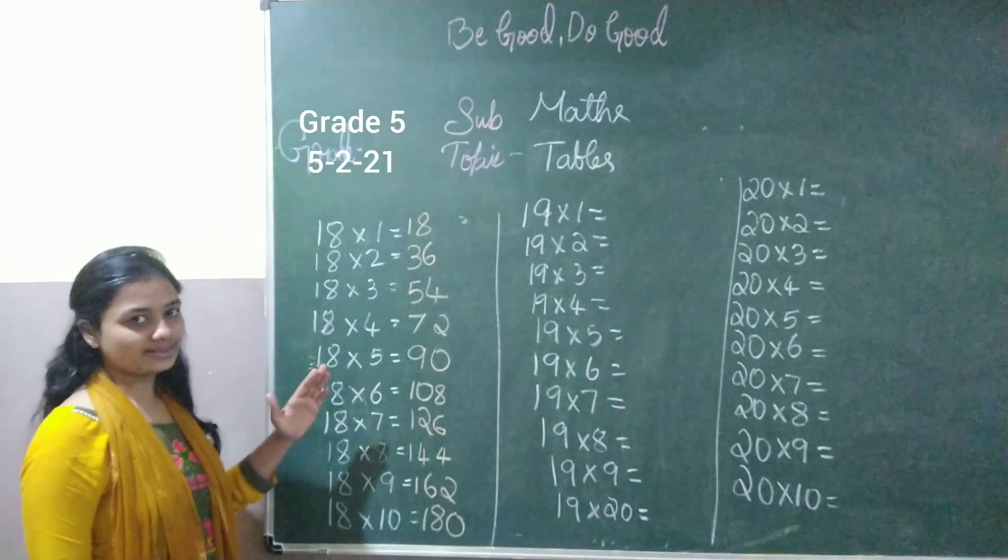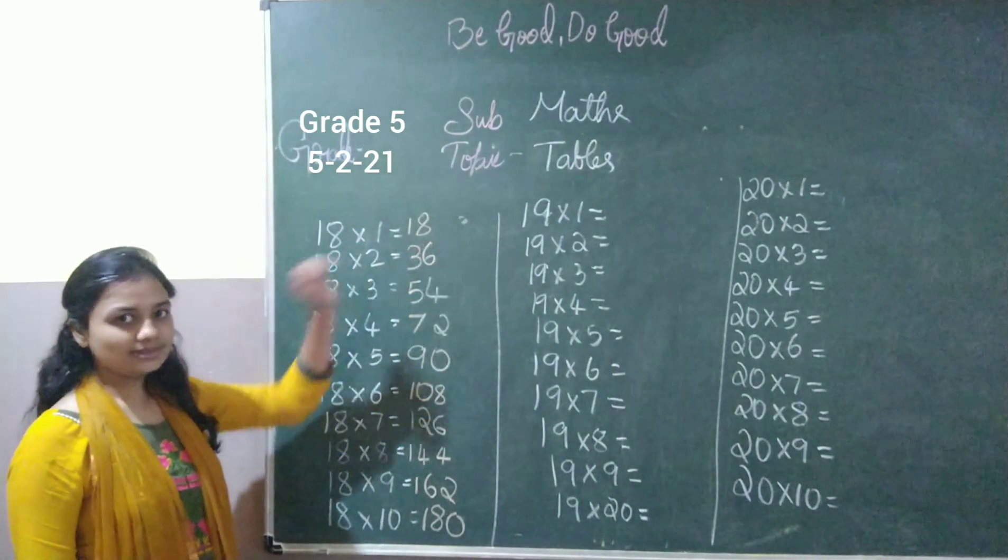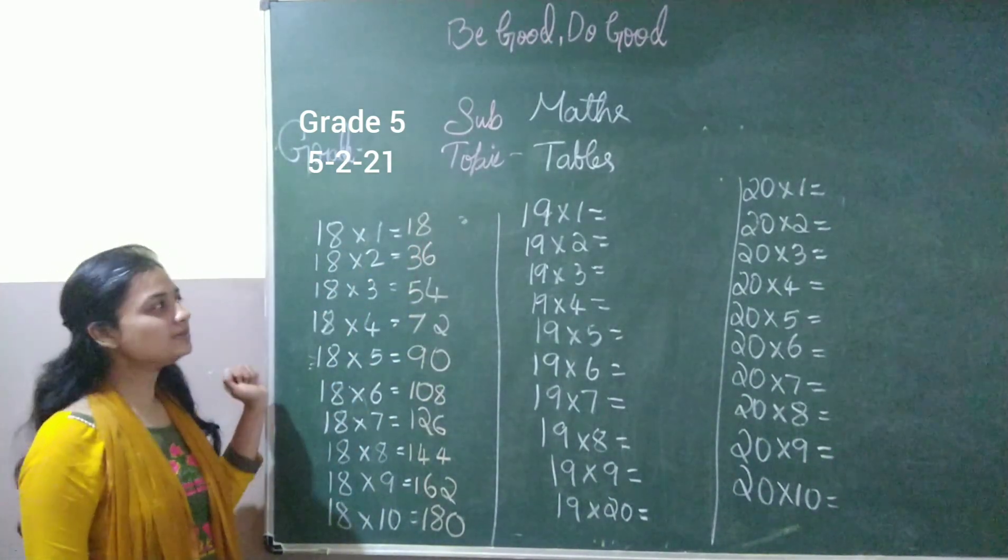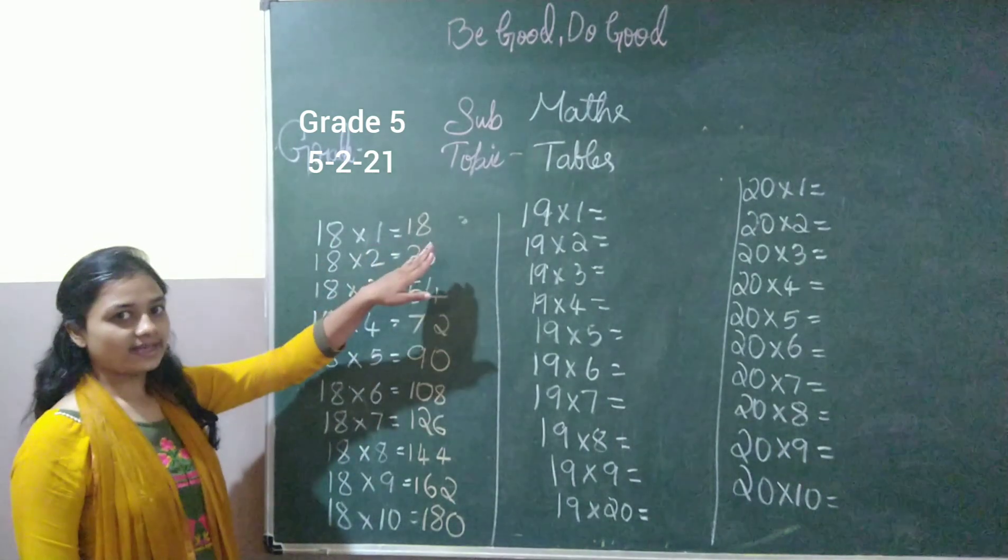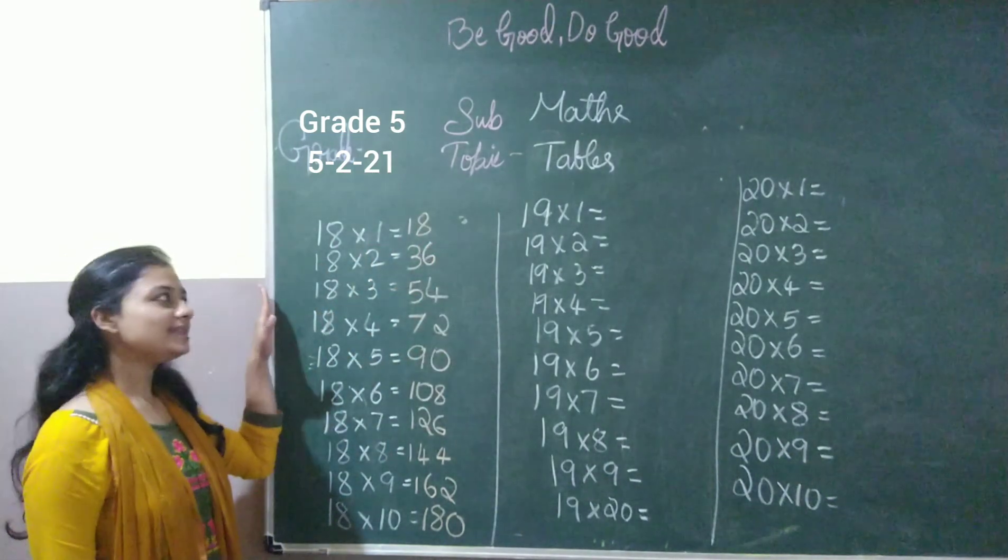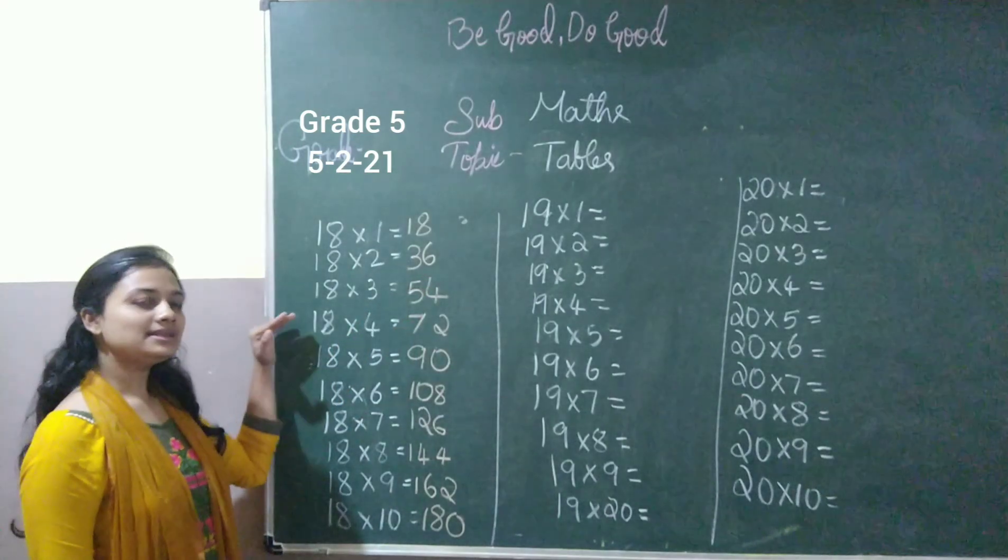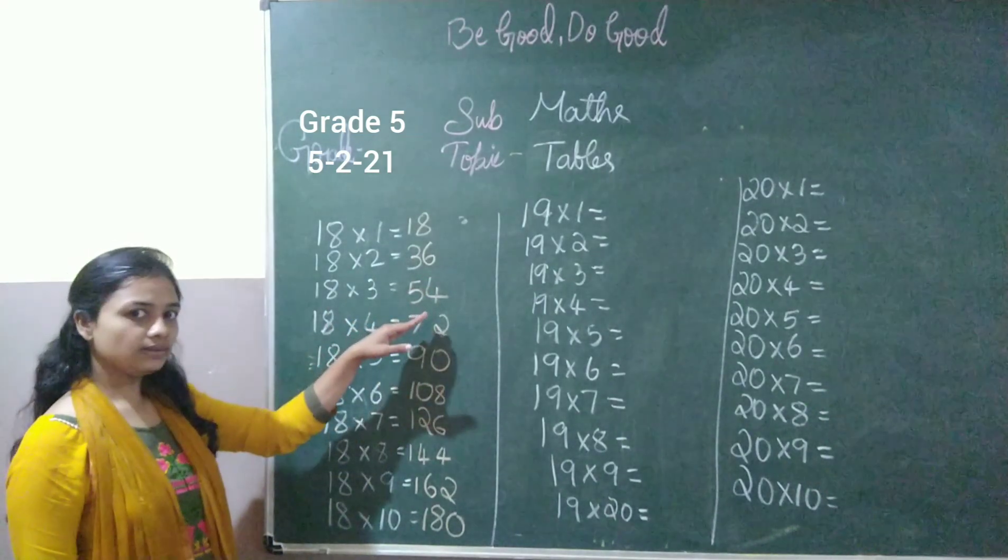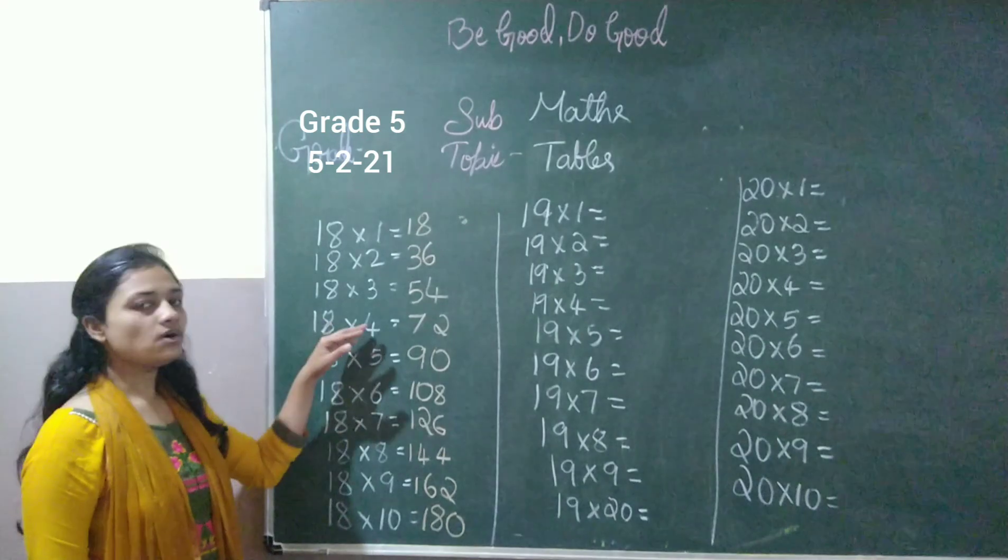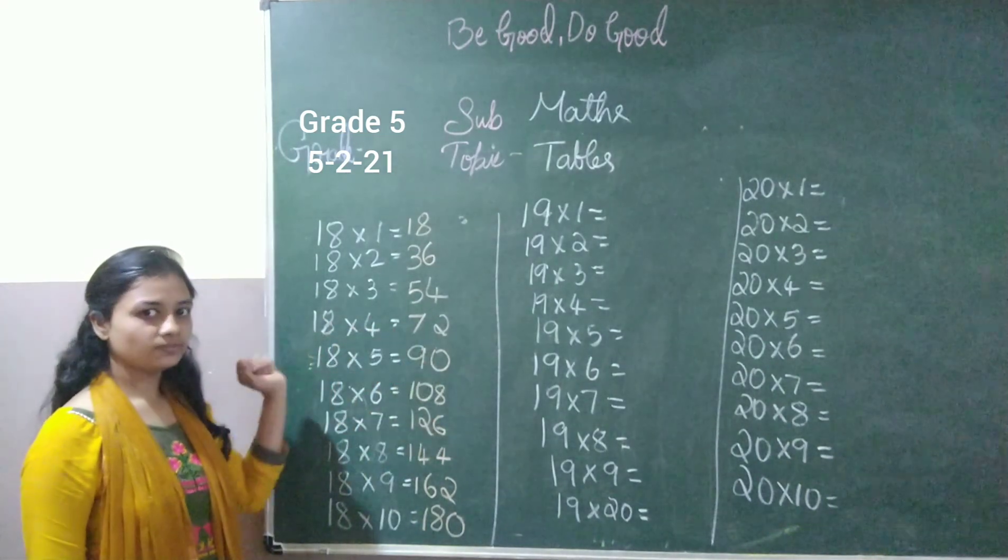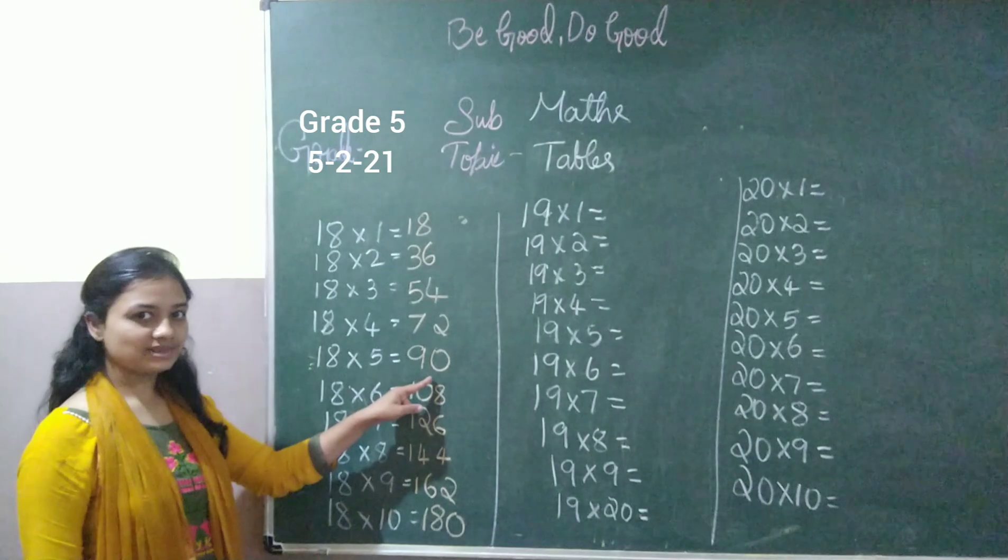So let's revise it. 18 times 1 is 18. Repeat after me. 18 times 1 is 18. 18 times 2 is 36. 18 times 3 is 54. 18 times 4 is 72. 18 times 5 is 90.